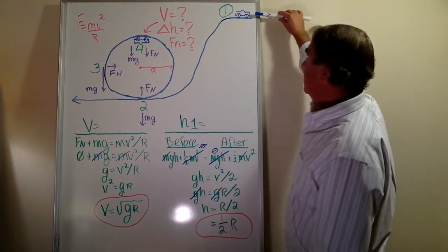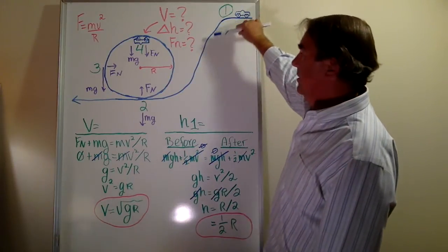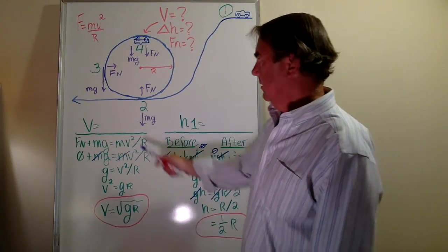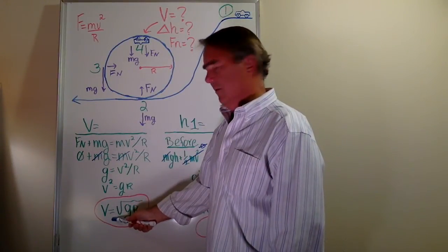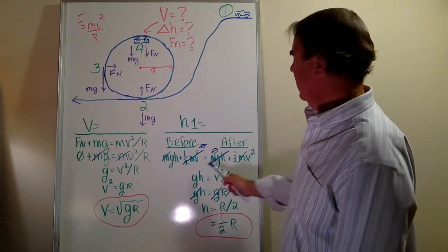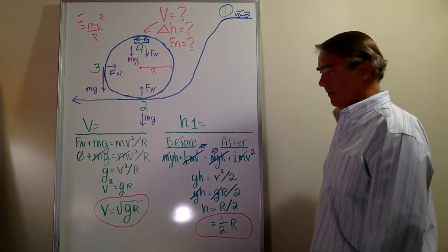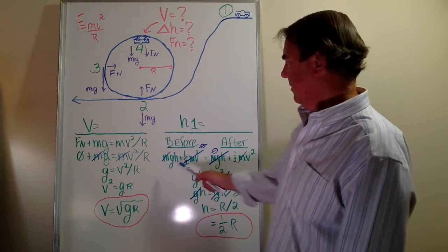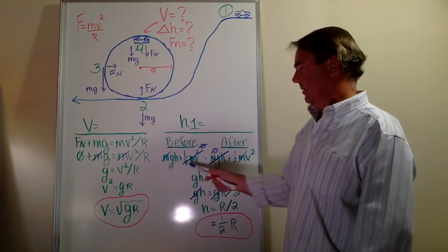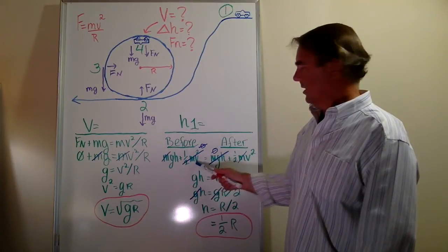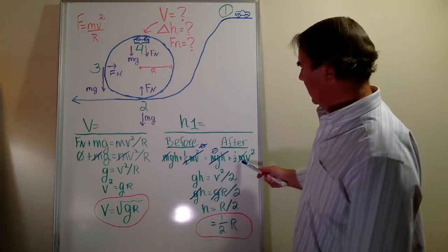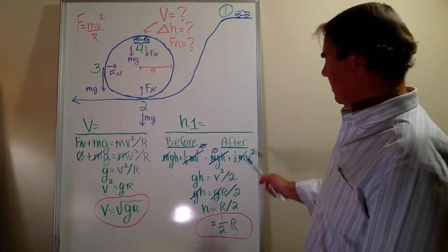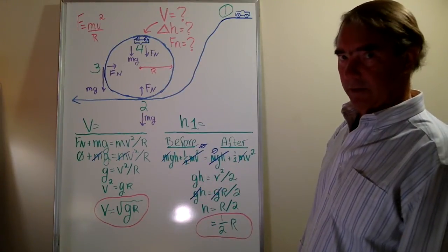The second question is at what initial height does the car need to be in order to have enough momentum to make it all the way around the circle. The first task is to solve the velocity question, then use conservation of energy to solve the elevation question. The algebra for conservation of energy states that initial potential energy plus kinetic energy equals final potential energy plus kinetic energy. Mass exists in all four terms and can be canceled since the car's mass is constant.